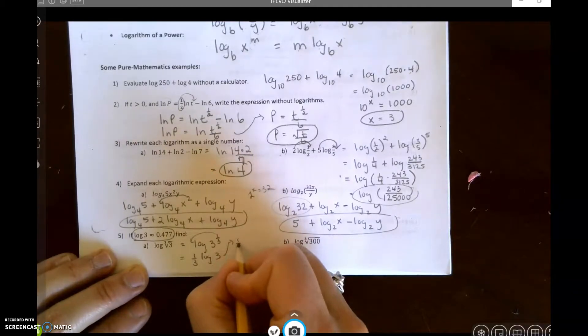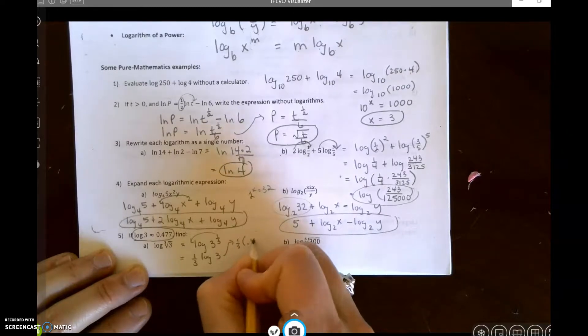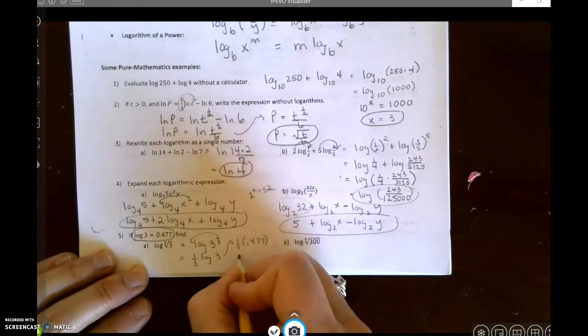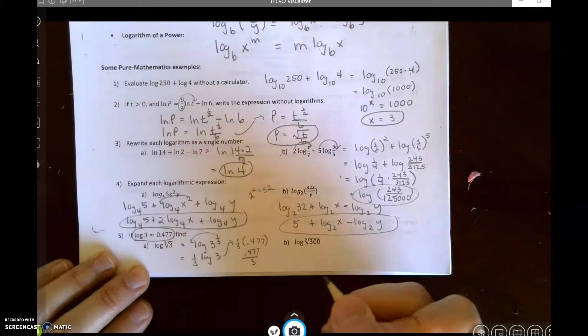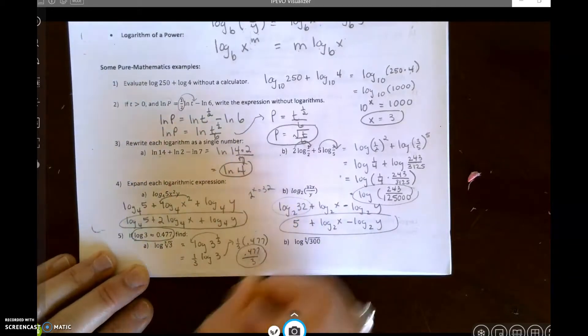So I get one-third times 0.477. So I get 0.477 over 3, and I can leave that as my answer.